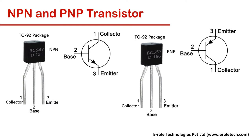This is the symbol of NPN and PNP transistor. To turn on, an NPN transistor needs 0.7V between the base and emitter terminal.